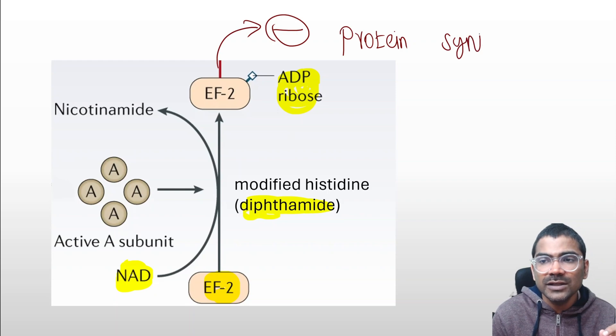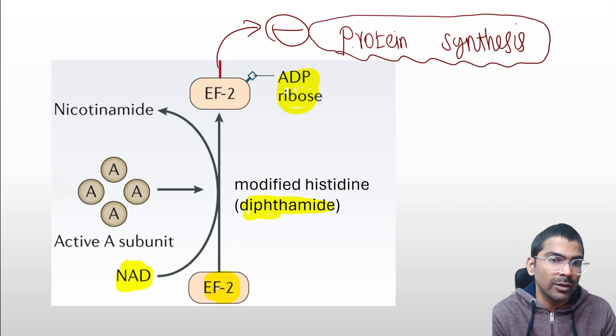Diphtheria toxin acts on eukaryotic cells. Remember, it does not act on prokaryotes.